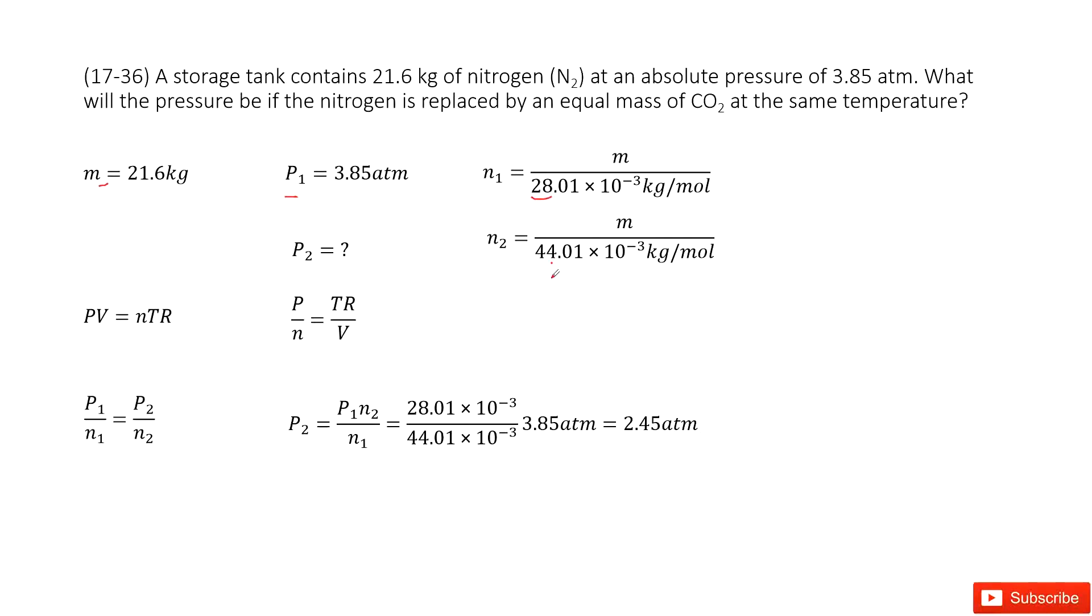Now, next one. How can you find the pressure? We consider ideal gas law. PV equals nRT. So in this function, we can convert to this one: P over n equals T times R divided by V. Right?